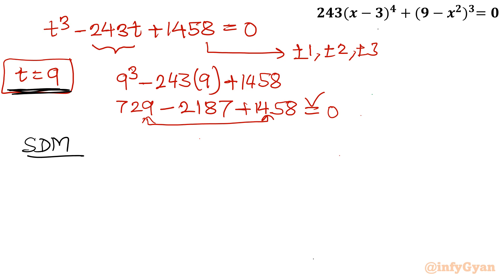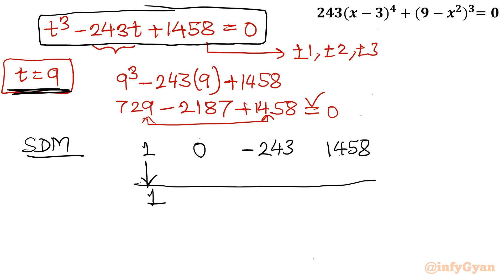Let me write all the coefficients of this cubic equation. So I will write 1. T squared is nowhere, so 0, minus 243, and then I will write 1458. Let me put over there one line. Leading coefficient as it is 1. Now 9 times 1 is 9. I will write 9.